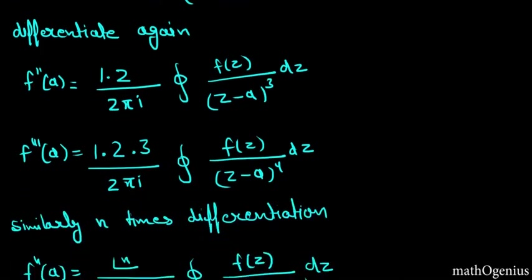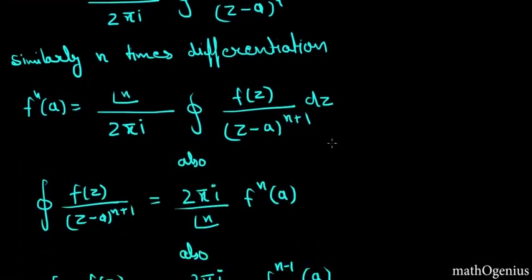Now if we differentiate three times we will get this, and now we will generalize this so that if we differentiate n times we will get f^n(a) is equal to n factorial by 2πi integration of f(z) by (z minus a) raised to the power n plus 1 dz.